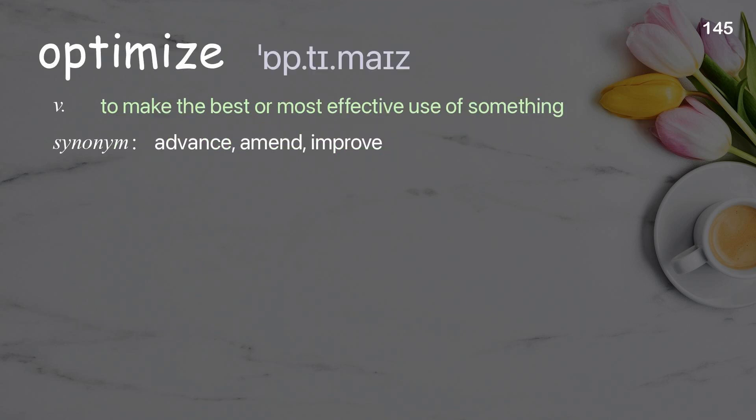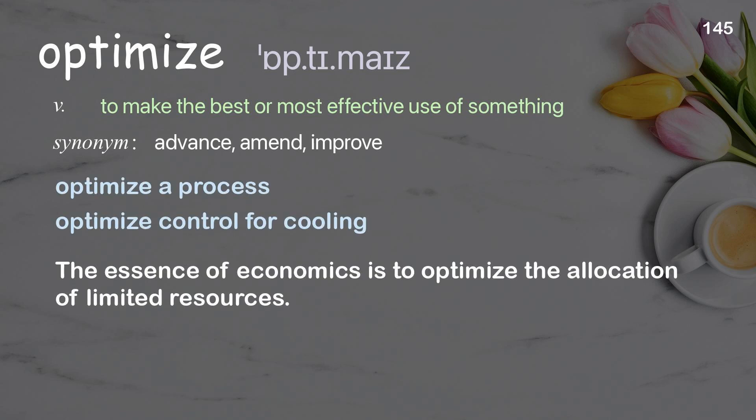Optimize: to make the best or most effective use of something. Examples: optimize a process, optimize control for cooling. The essence of economics is to optimize the allocation of limited resources.